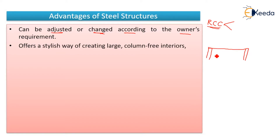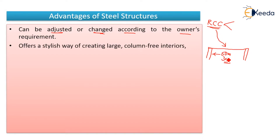For example, if there is a column here and another column at a certain point, and the span of this structure is say 50 meters or 30 meters, that is a large span. If you have to provide a normal RCC beam for this type of structure, the depth of the beam will be very large.